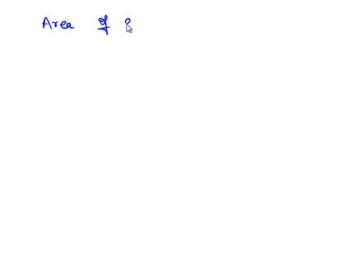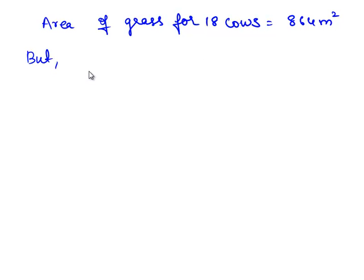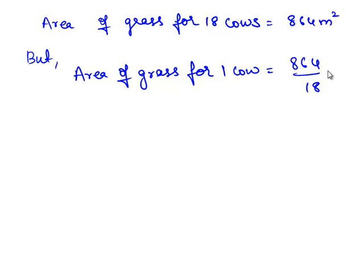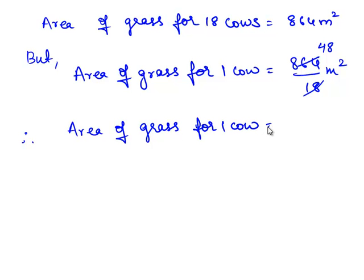According to the question, the grass in the rhombus shaped field is sufficient for 18 cows to graze. Therefore, the area of grass for 18 cows is 864 square meters. So the area of grass for 1 cow is 864 ÷ 18 = 48 square meters. Therefore, the area of grass sufficient to graze for 1 cow is 48 square meters.